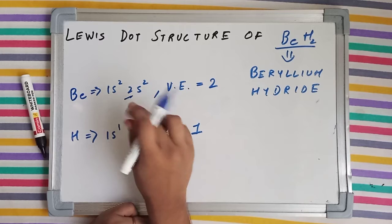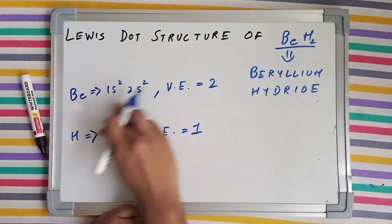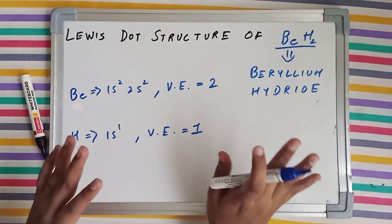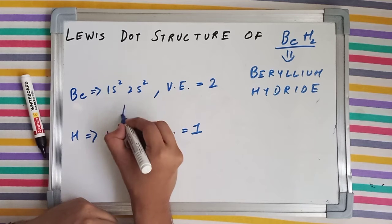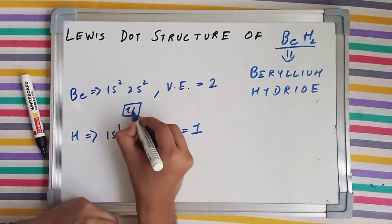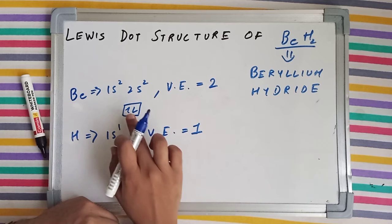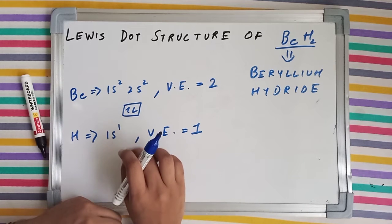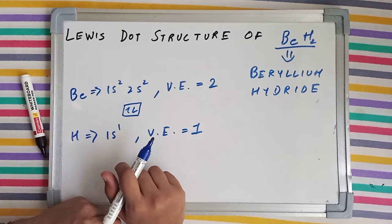Right now it's not going to make bonds. Why? If you draw the orbital diagram of 2s, it is going to be in a couplet form. The electrons are paired. So, what should we do?